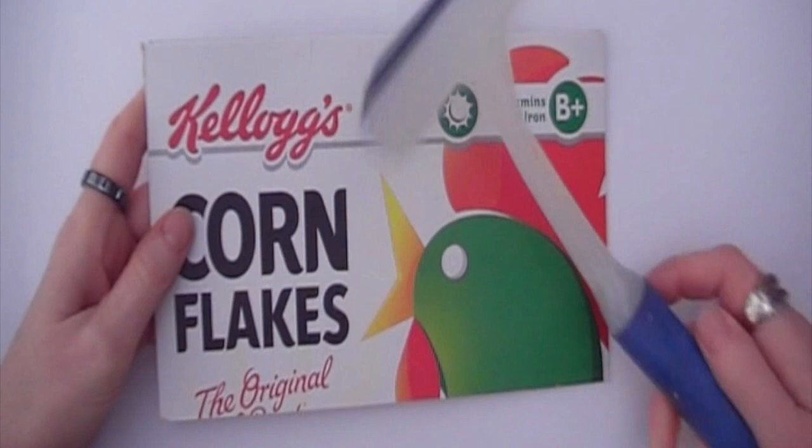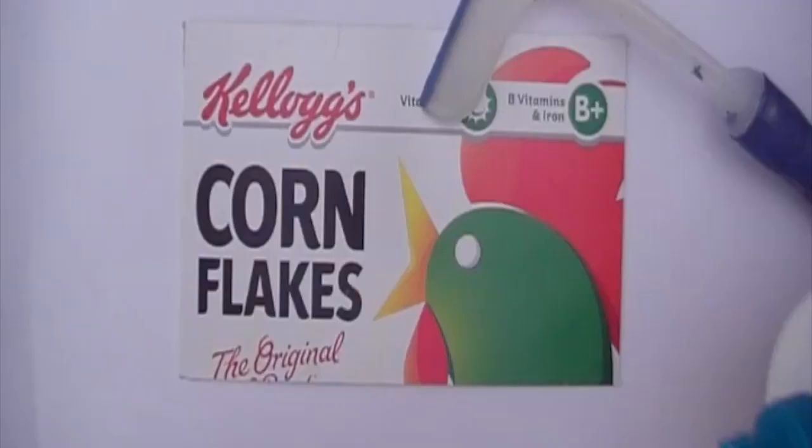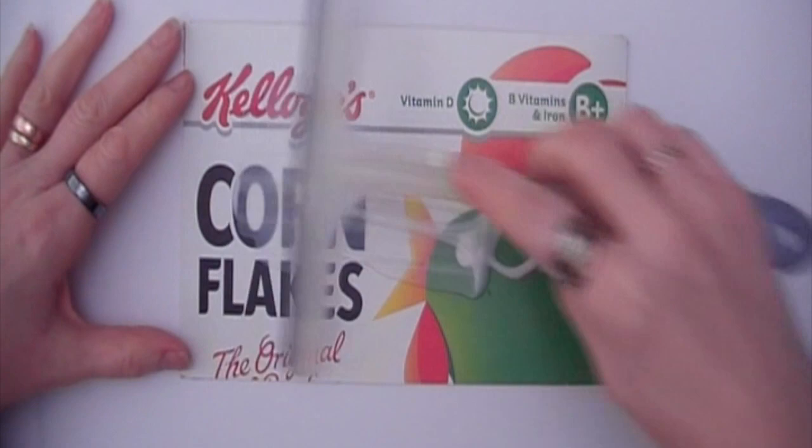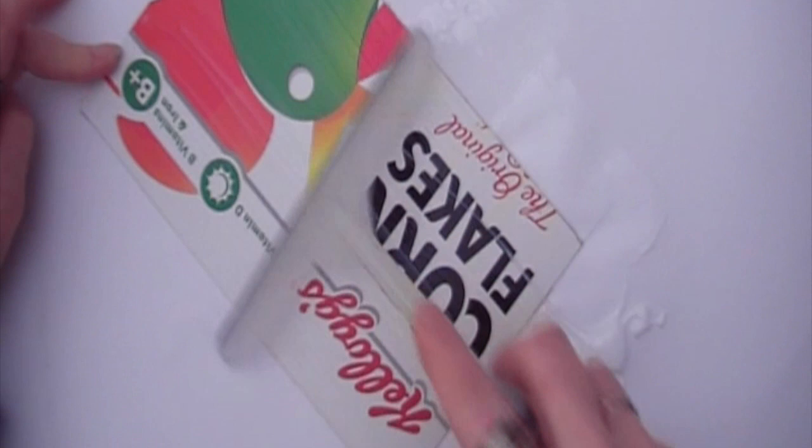First you need to condition the cardboard with two coats of PVA glue all over. This makes the cardboard very strong and durable. You need to put two coats on the front and the back and let it dry thoroughly before you use the card.